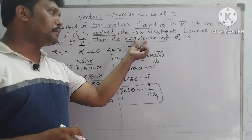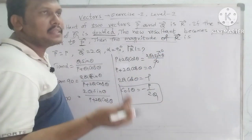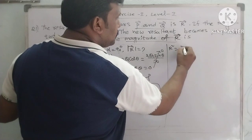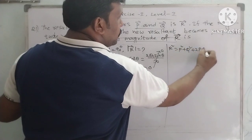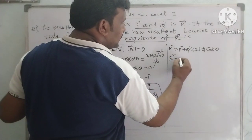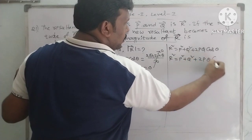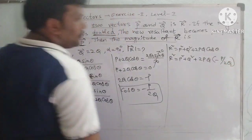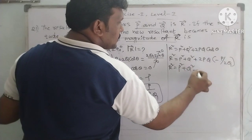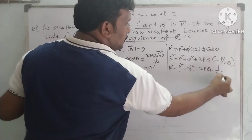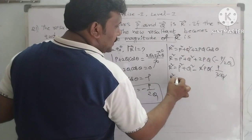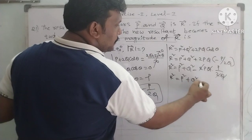Now what do we have to do? We have to find the magnitude of R vector. The expression for the magnitude of the resultant vector is: R squared equals P squared plus Q squared plus 2PQ cos theta. Substituting cos theta equals minus P divided by 2Q: R squared equals P squared plus Q squared plus 2PQ times minus P divided by 2Q.